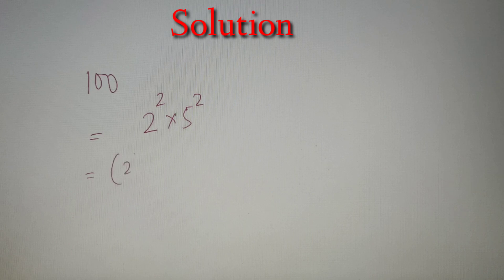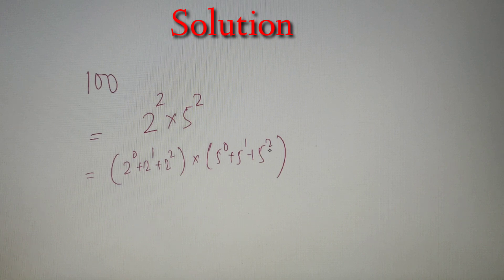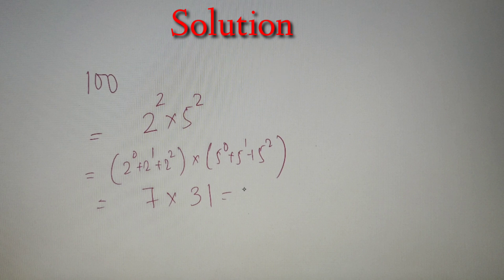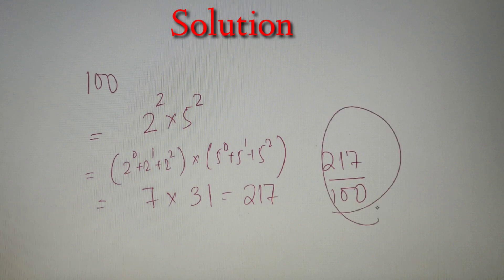The sum of factors is (2⁰ + 2¹ + 2²) × (5⁰ + 5¹ + 5²). For finding the sum of factors, we write all powers of each prime from 0 up to its given power and multiply the brackets together. The first bracket gives 7 and the second gives 31, and 7 × 31 = 217. So the sum of factors of 100 is 217, and the sum of reciprocals of all factors of 100 is 217/100.